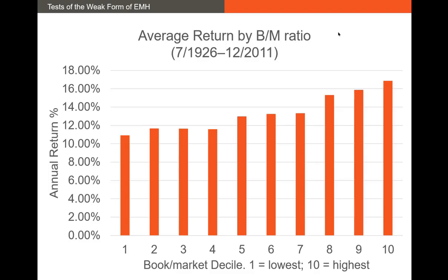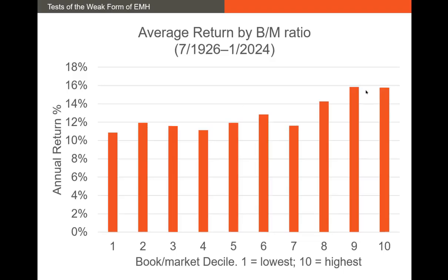Another anomaly you should be familiar with is the value anomaly. Sorting stocks into portfolios based on book-to-market ratio, the stocks with the lowest book-to-market ratio are on one side and the stocks with the highest book-to-market ratio are on the other. Value stocks — high book-to-market stocks — absolutely outperform what we sometimes call growth stocks, the low book-to-market ratio stocks, pretty significantly. Even when I update the data, the anomaly doesn't bear out quite as strongly over the most recent time period, but you can still see a definite upward trend. Value stocks continue to outperform growth stocks by about 5%.